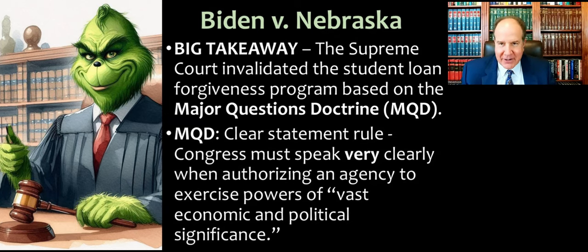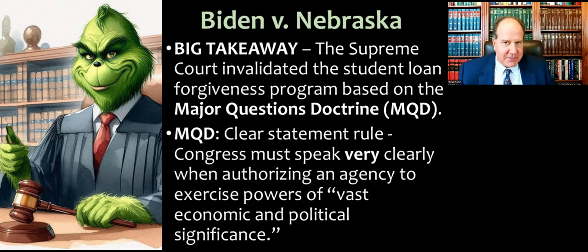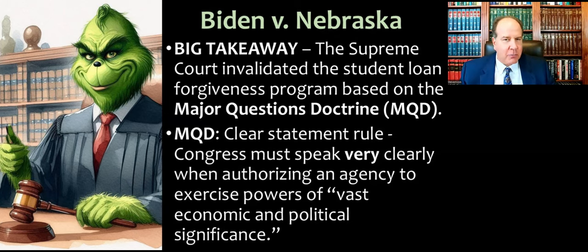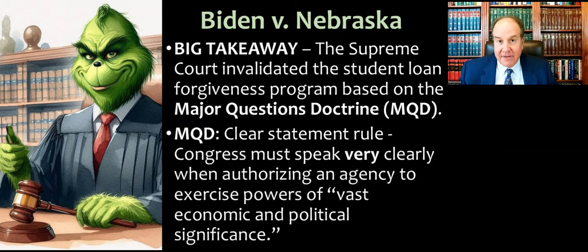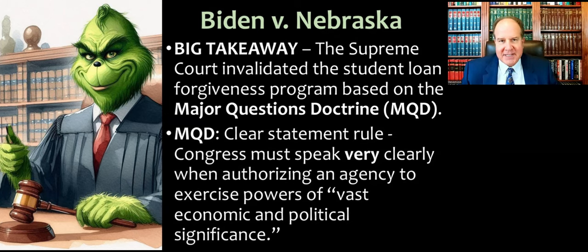Our big takeaway here is that the Supreme Court invalidated the student loan forgiveness program based on something called the Major Questions Doctrine, or MQD. It's basically what we call in law, and especially statutory interpretation circles, a clear statement rule. In other words, Congress must speak very clearly and explicitly when authorizing an agency to exercise powers of vast economic and political significance.